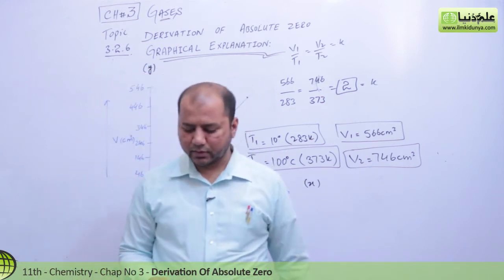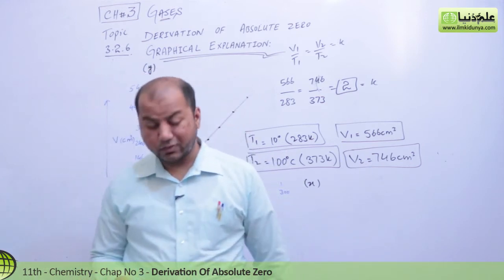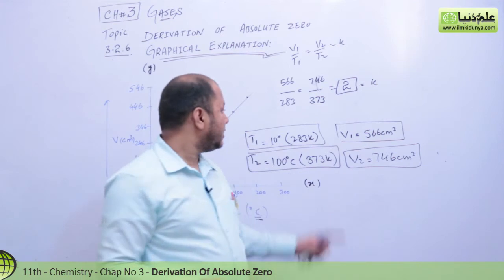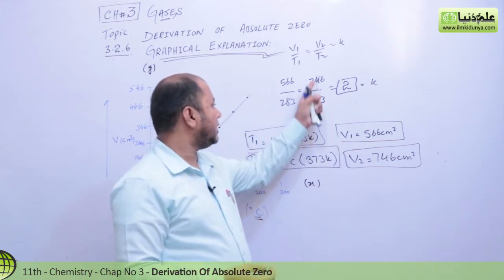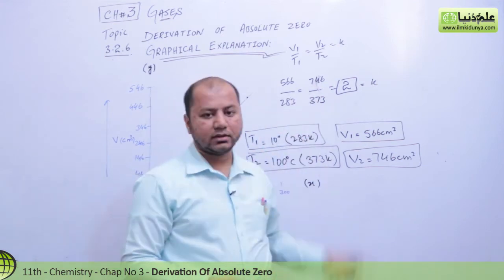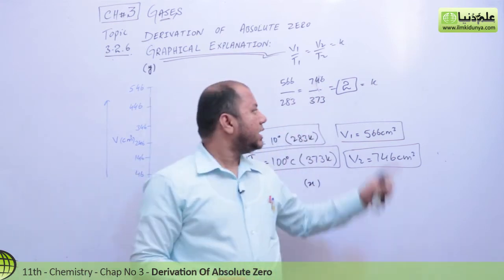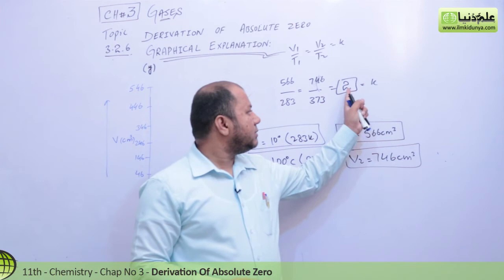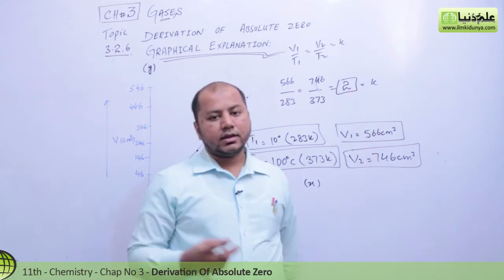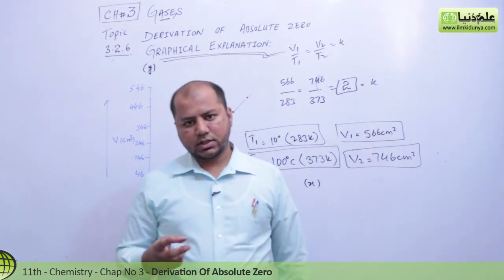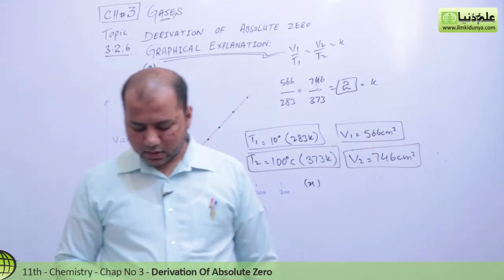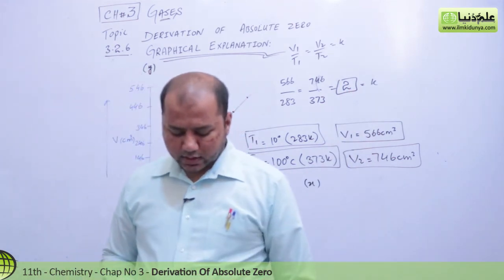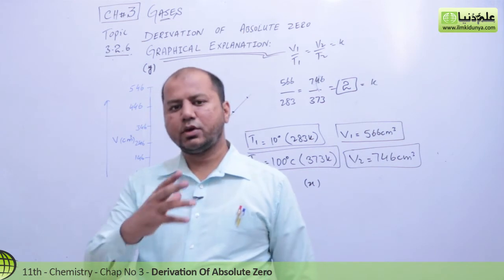So we conclude a constant of 2, expressed in cm³ per kelvin. The units of the constant are cm³ per kelvin — that is, volume per temperature — which are the two units we derive whenever we calculate this ratio.